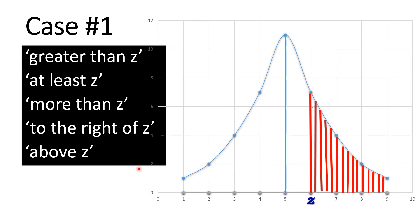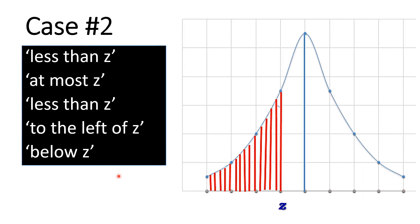A few reminders about shading cases. When you see keywords such as greater than z, at least z, more than z, to the right of z, or above z, shade after the z-value — to the right. When you see less than z, at most z, to the left of z, or below z, the shaded part is on the left side of the given z-value. Take note of this.